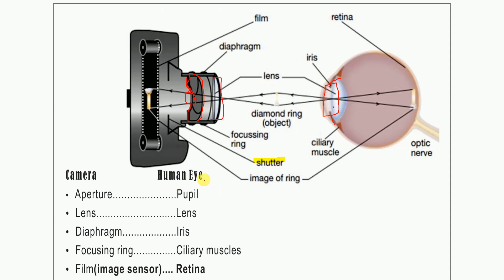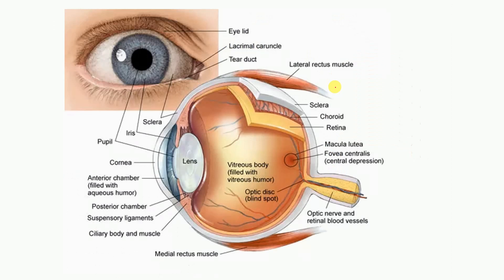Next is the focusing ring. When we rotate the focusing ring on a camera, we get exactly the proper focus. The equivalent in the human eye is the ciliary muscles. The ciliary muscles perform fine focusing of the lens by making it thin or thick.